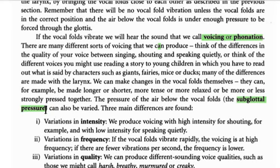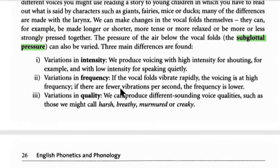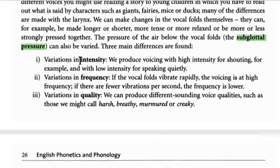We can actually control the subglottal pressure in three ways. The first is intensity. We can control the intensity of our voicing — if we shout or raise our voices, we increase the pressure under the larynx. So the difference between speaking quietly and shouting is intensity: high intensity when shouting, and low intensity when speaking quietly.